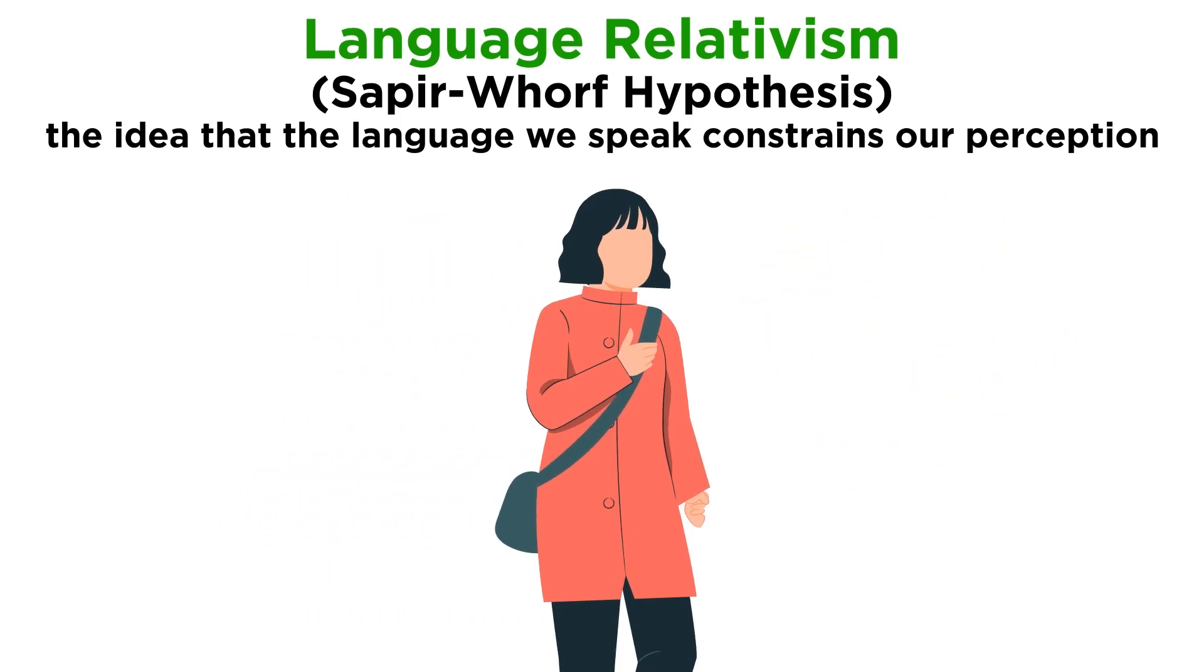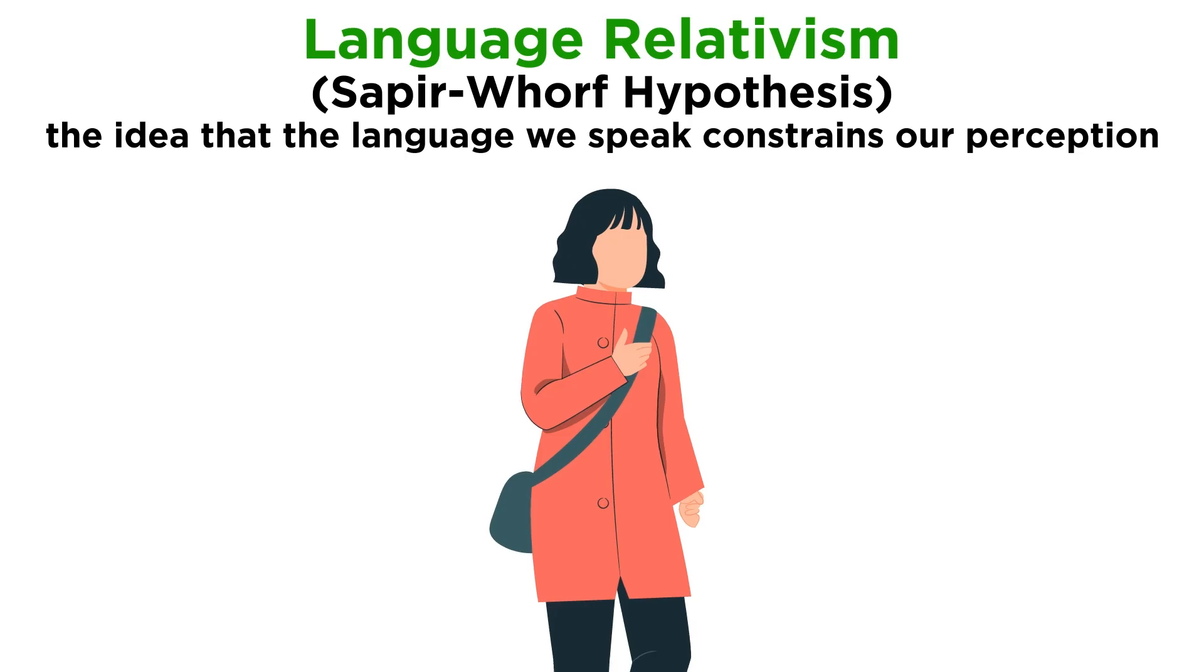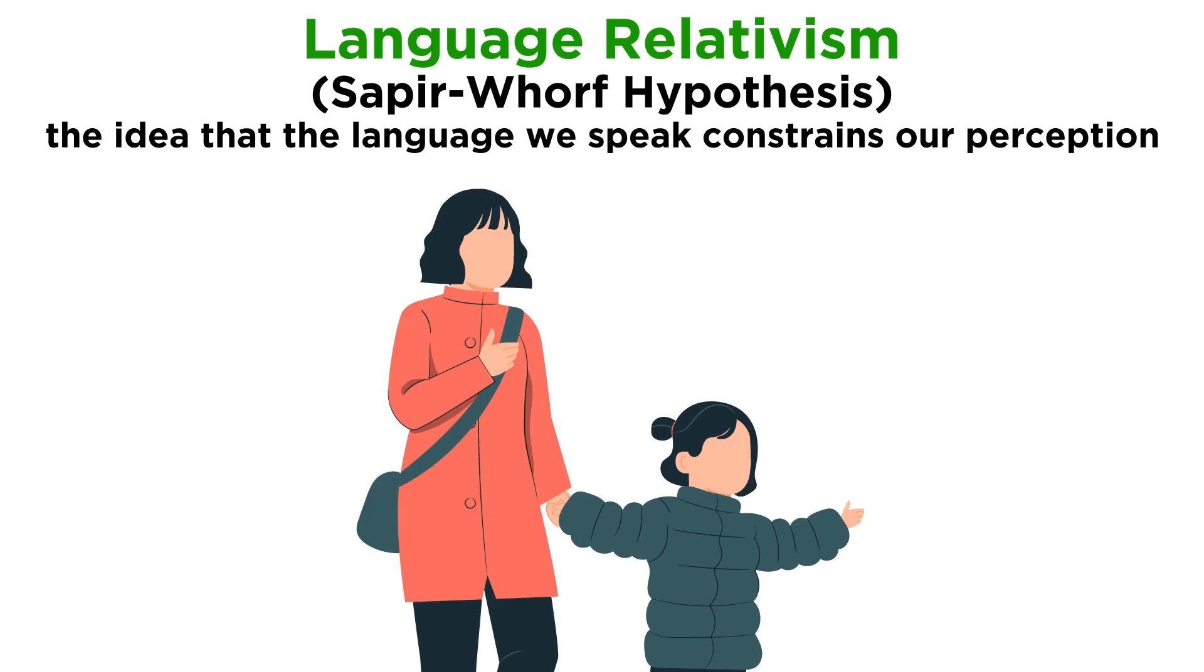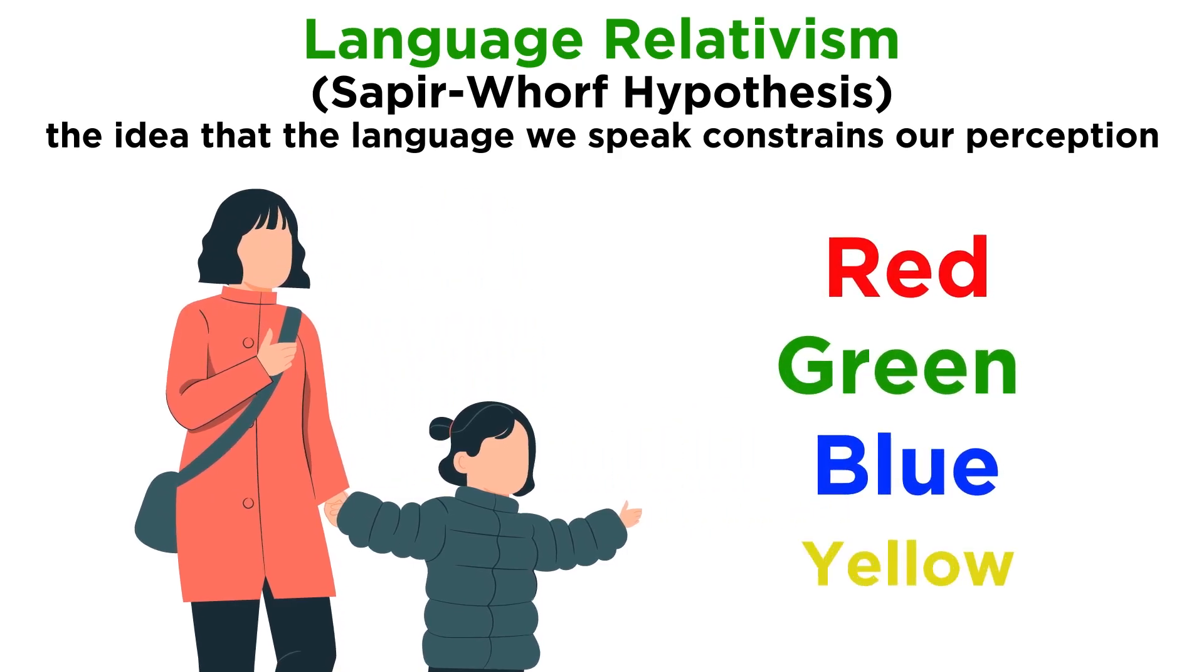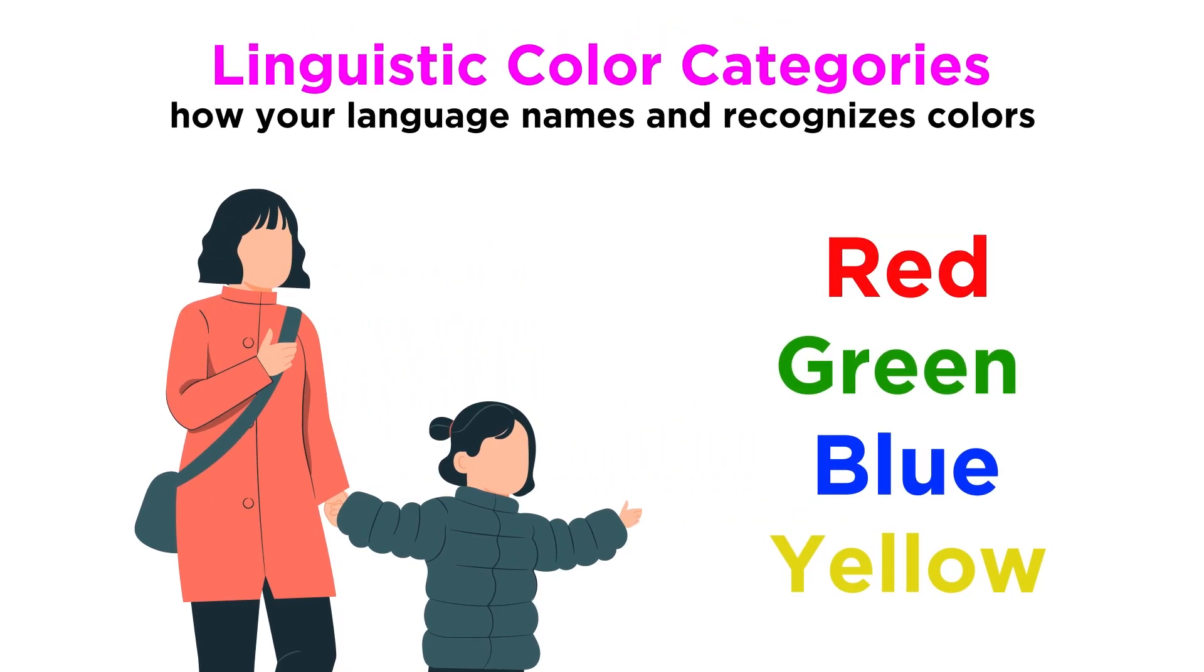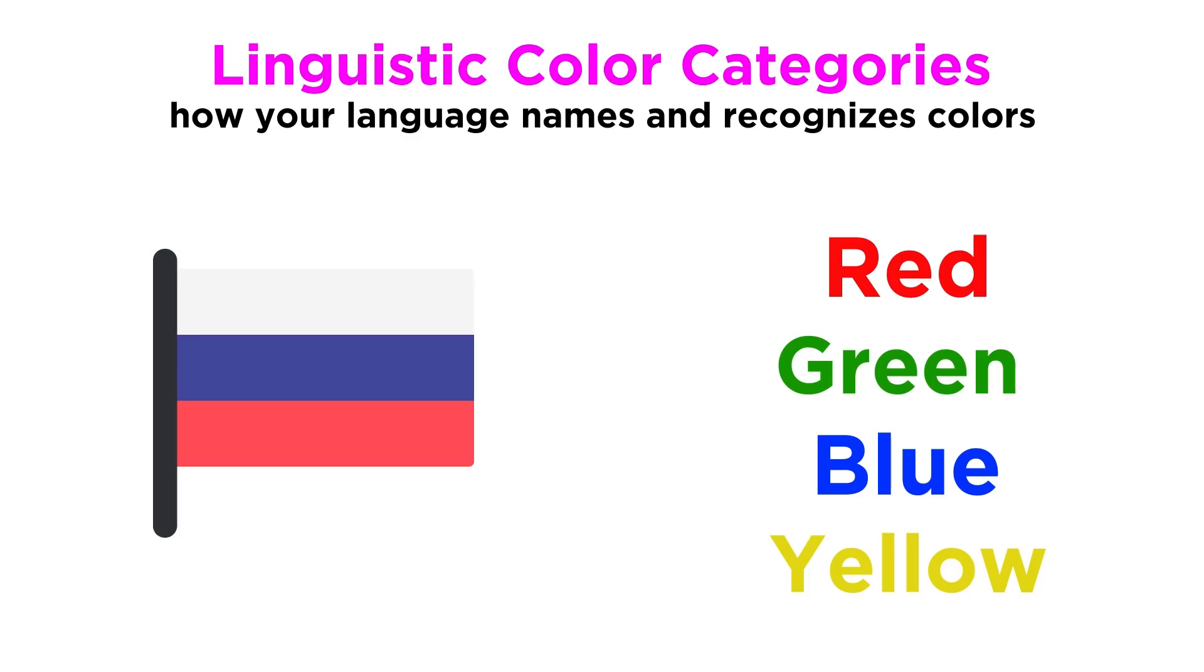Now, this isn't as crazy as it sounds. We do have basic universals in perception, regardless of language. Infants, and individuals from cultures with only terms for light and dark, are able to tell the difference between basic colors like red, green, blue, and yellow. However, linguistic color categories, or how your language names and recognizes colors, does shape how readily we are able to see and discriminate between colors.